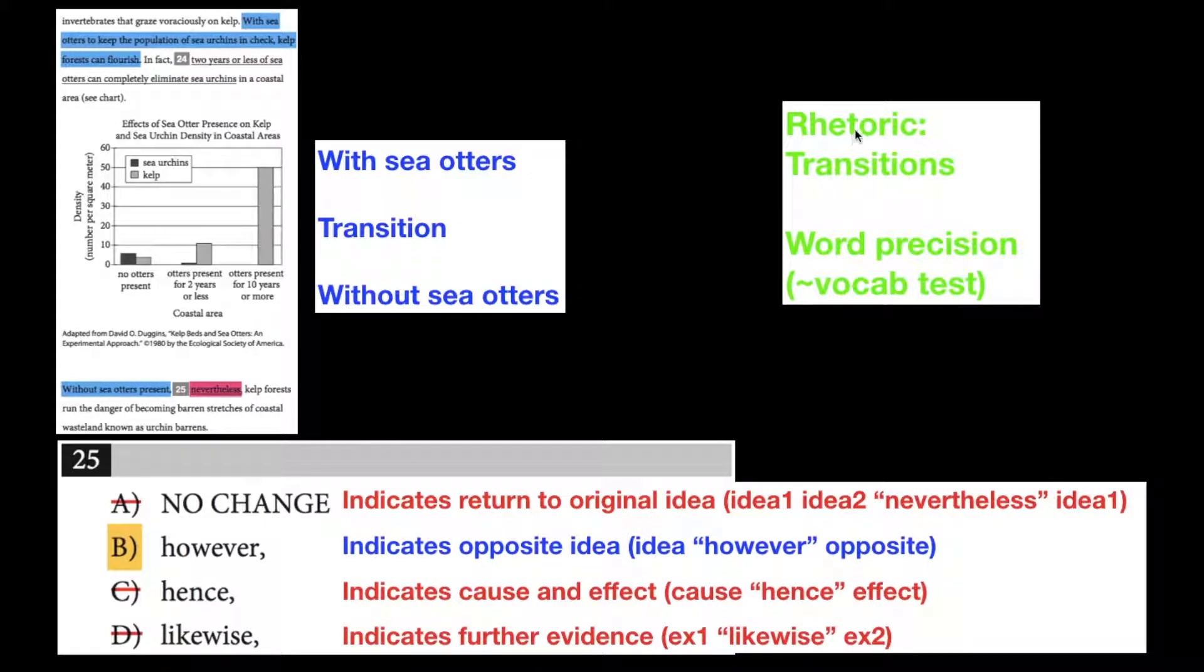Question number 25 is a rhetoric question on transitions, and you might even call it word precision. Word precision is basically the closest thing that the SAT has to a vocabulary test, so you have to understand how the words however, hence, likewise, and nevertheless function as vocabulary words.